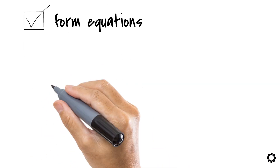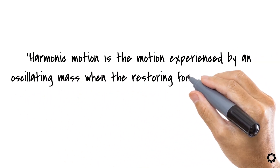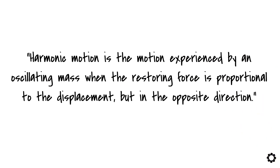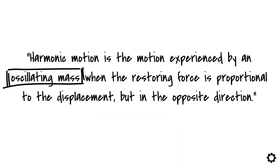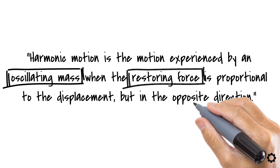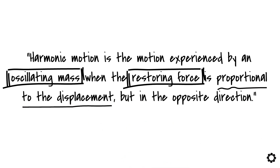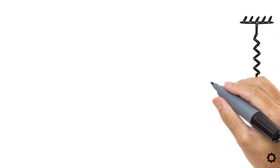Let's start with the definition. Harmonic motion is the motion experienced by an oscillating mass when the restoring force is proportional to the displacement, but in the opposite direction. The key points here are that it has to be an oscillating mass, meaning that the motion has a back-and-forth nature to it. And the restoring force that makes it move back-and-forth is always proportional to the displacement, but in opposite directions.